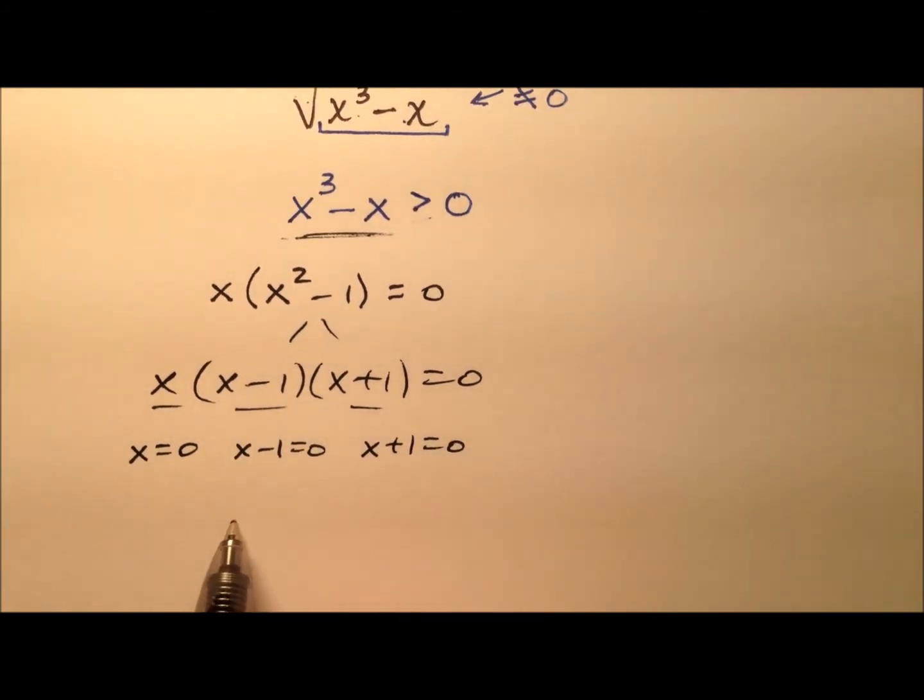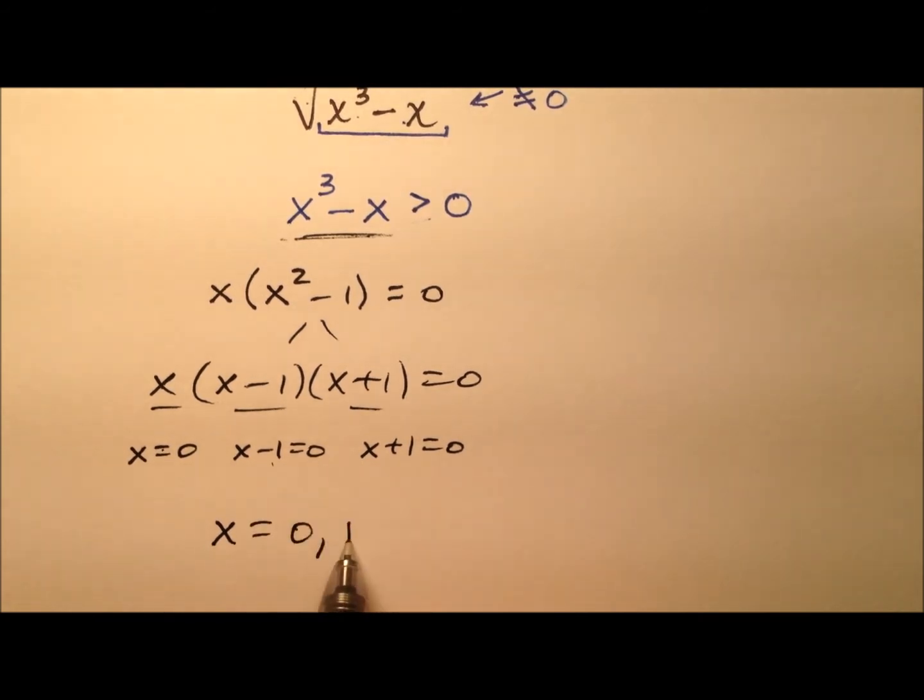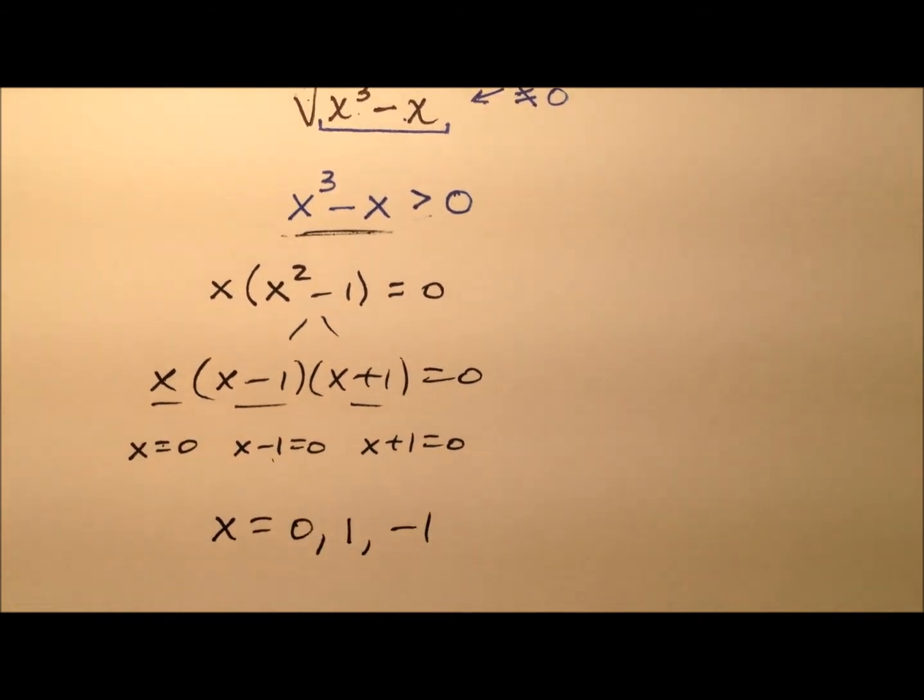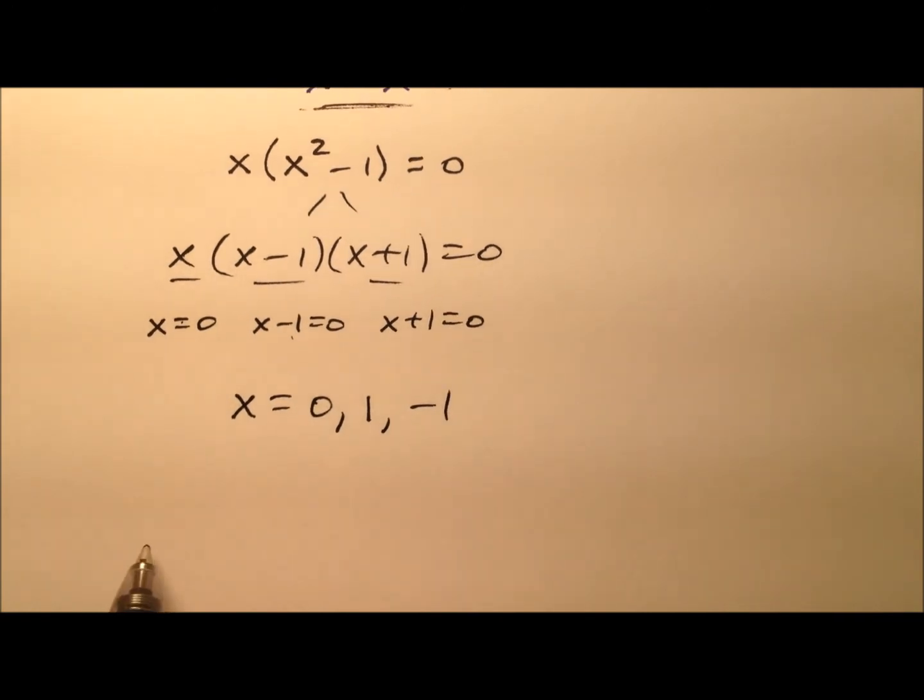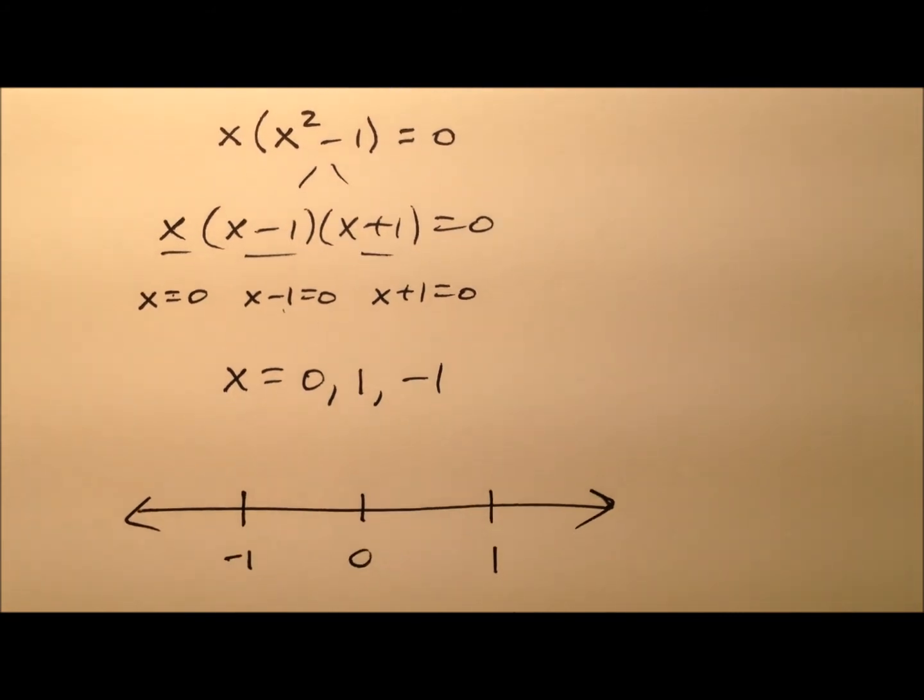We have three values: x equals zero, positive one, and negative one. I'm going to draw a number line and plot those three values: negative one, zero, and positive one. These are the values that when plugged into the function will give me zero in the denominator, and that's a problem.